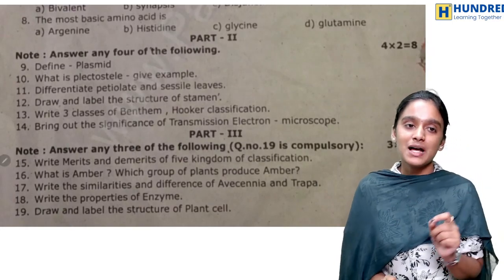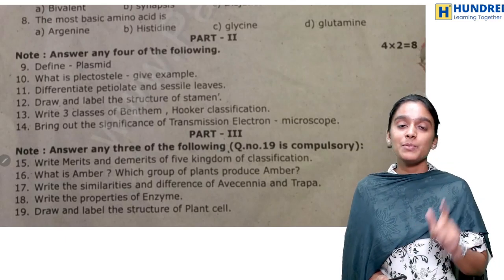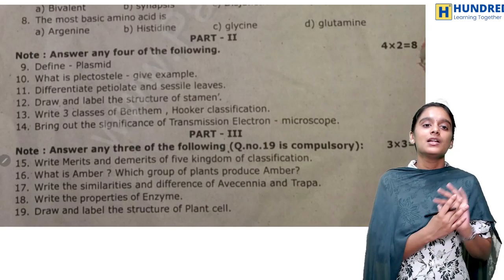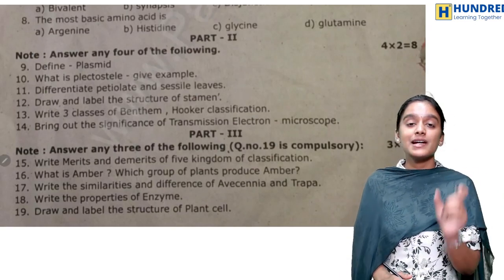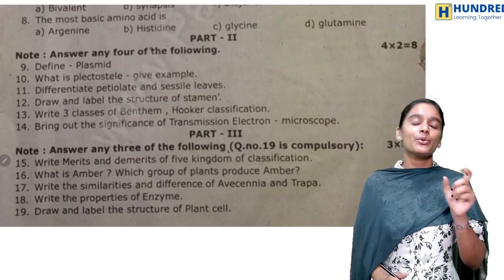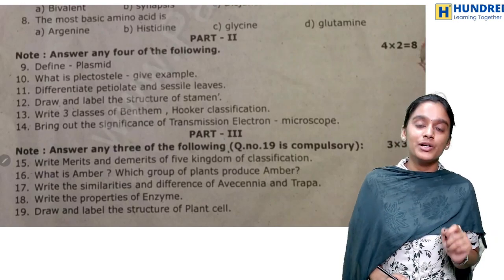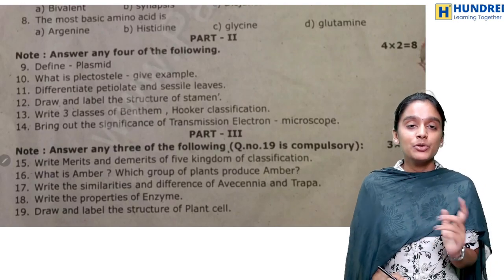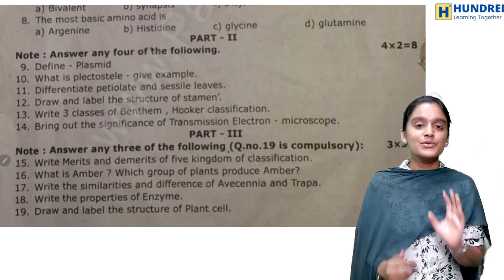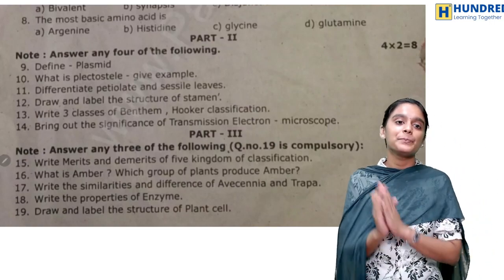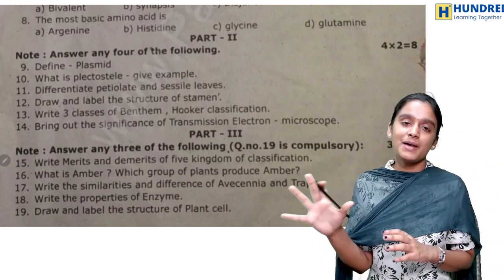In Part 2 you have to attend 4 questions out of 6 questions. These are 2-mark questions: define plasmid, what is stele, types of stele — all you have to learn together with the diagram. If you have any questions, you can expect: differentiate petiolate and sessile leaves, draw and label the structure of stamen. You can see diagrammatic questions for 2 marks.